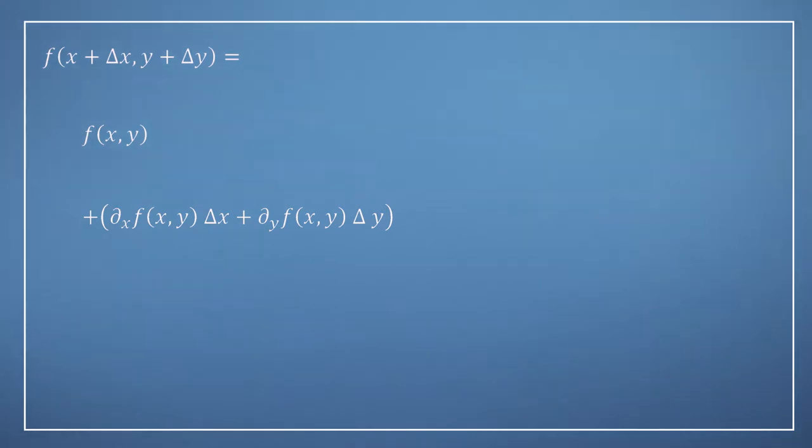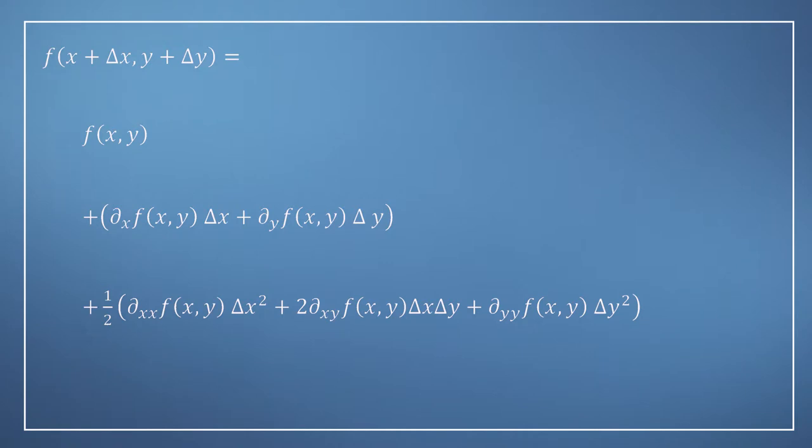If we look now at the second order approximation, we can see that the coefficient of one-half still remains, as per the one-dimensional case. But now we have three terms, all of which are second derivatives. The first has been differentiated with respect to x twice, the last with respect to y twice, and the middle term has been differentiated with respect to each of x and y.